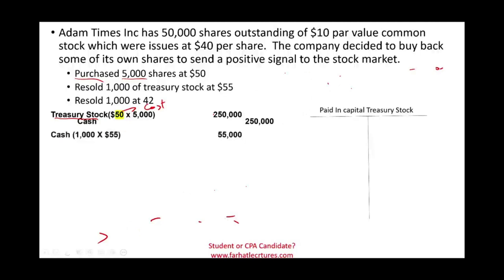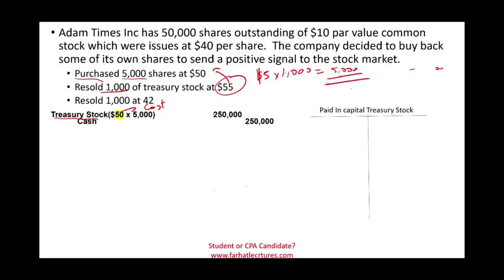Now we resold 1,000 of our treasury stock at $55. Remember, we purchased 5,000 shares, and now we're reselling 20% — 1,000 shares — of our own treasury stock. We sold them above what we paid, so technically there's a $5 profit per share. Multiplied by 1,000 shares, that's $5,000 in profit. However, we cannot call this a gain. Let's see how we journalize this entry.